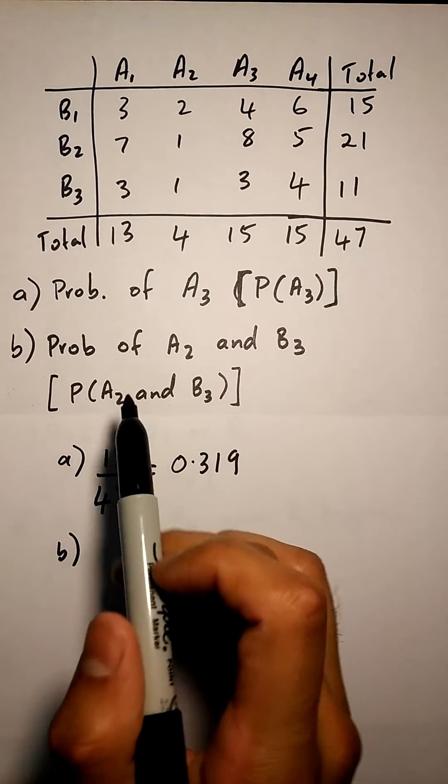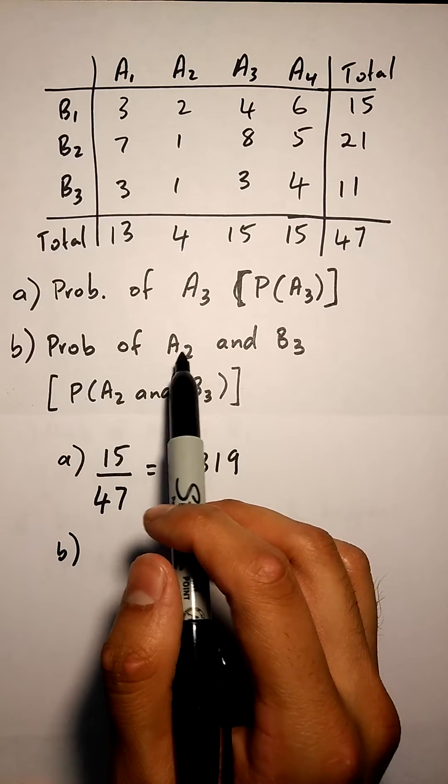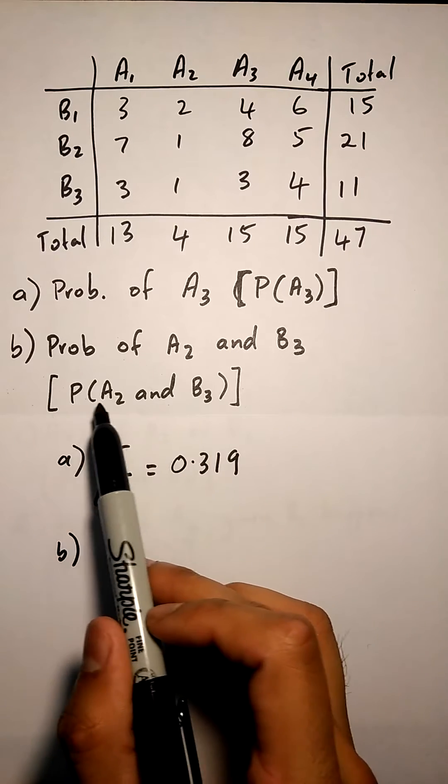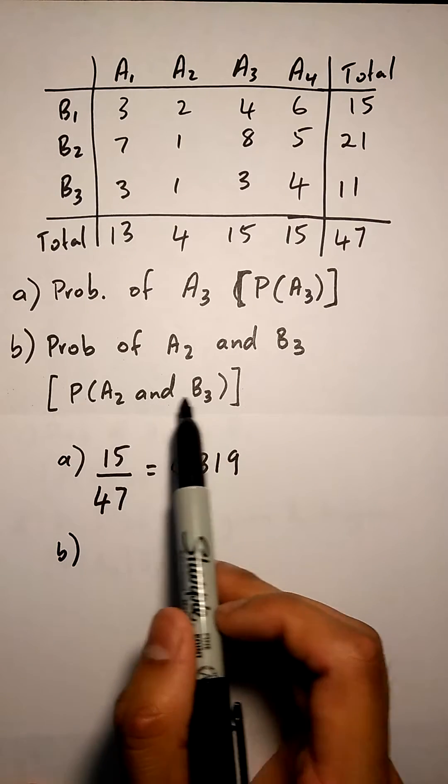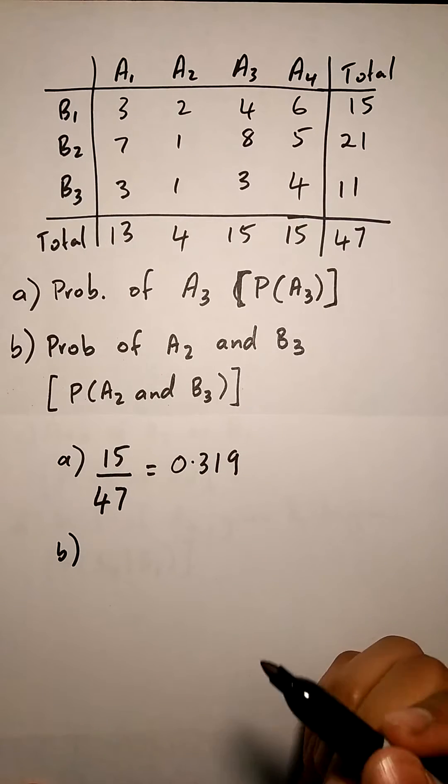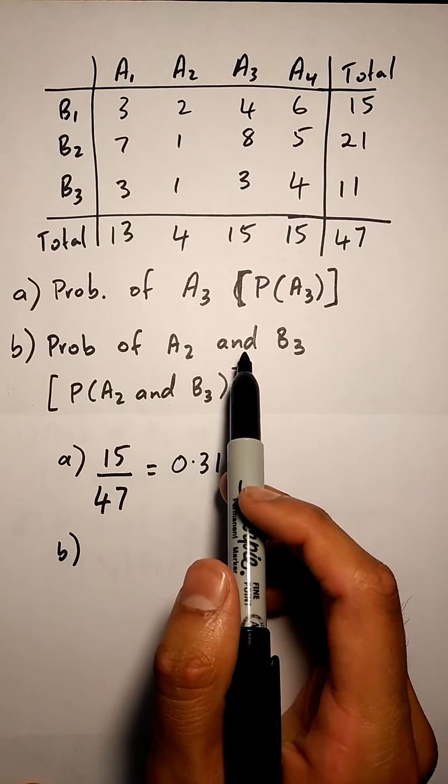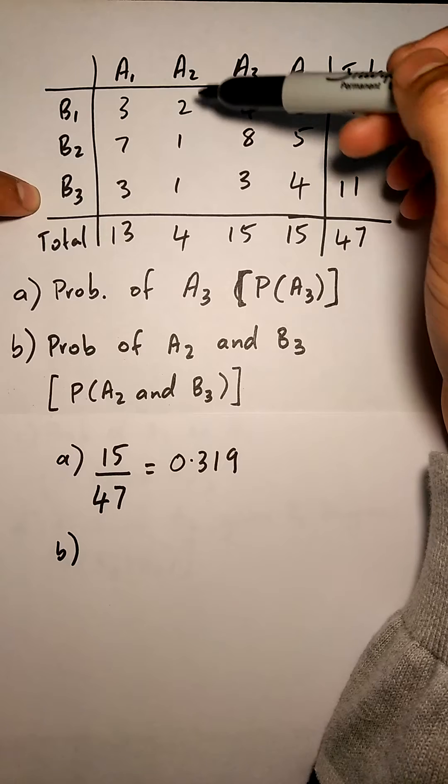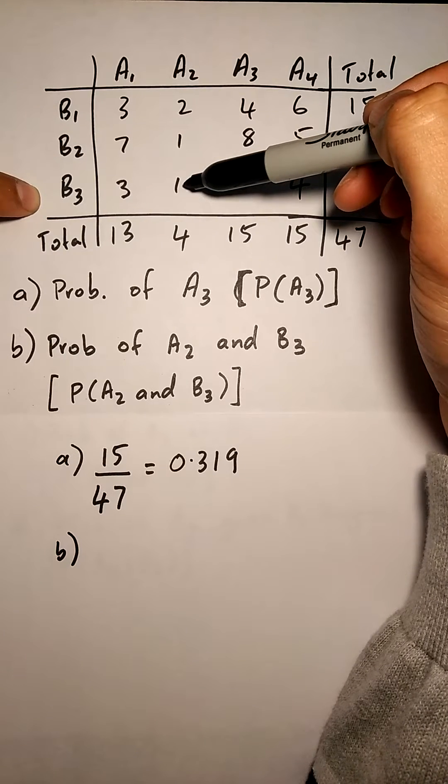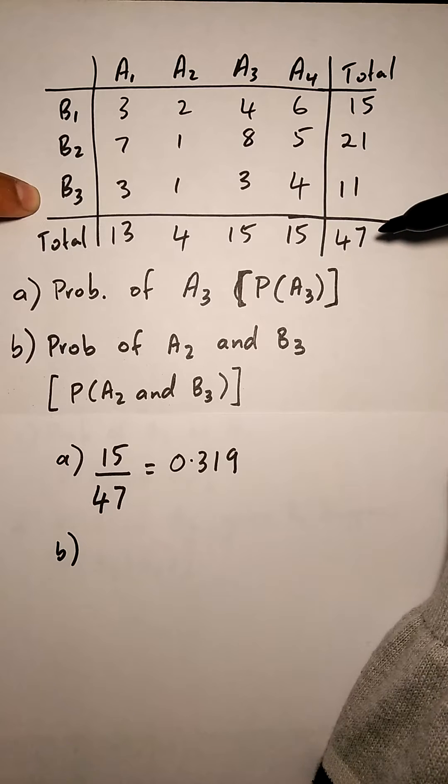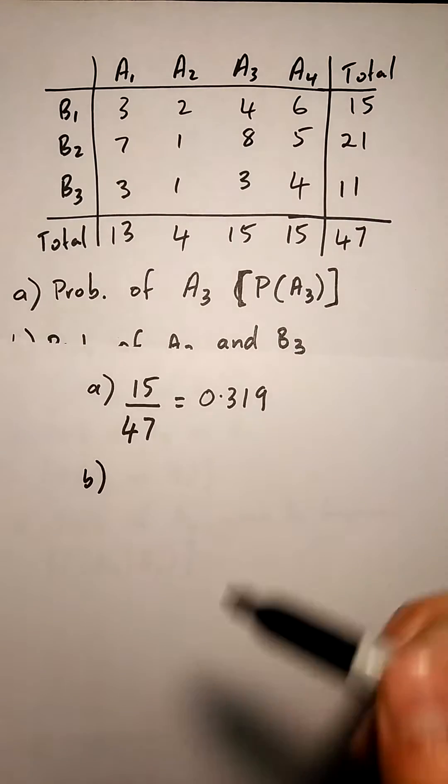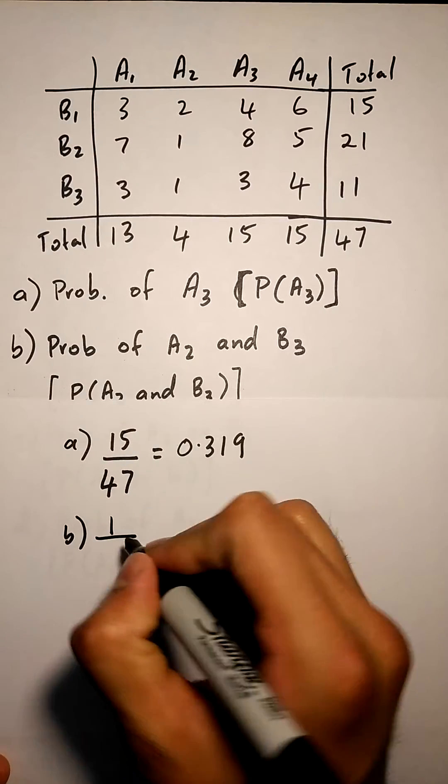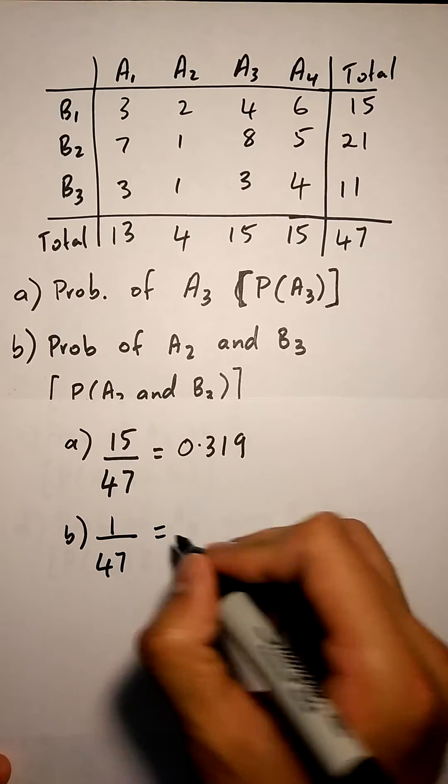In part b of the question, they ask us to find the probability of two things that both occur because they use the word 'and'. They could write it like P(A2 and B3), which means the same thing. When we're doing an 'and' question, you go to A2, go to B3, and see where they both intersect. They intersect at one. Again, we divide by the total. For part b, the probability of A2 and B3 would be 1 over the absolute total, which is 1 over 47.